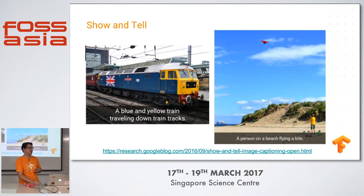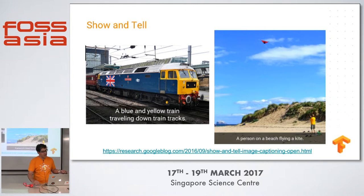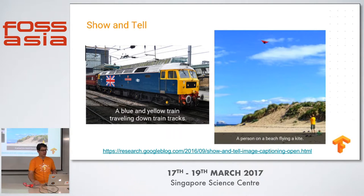Another really exciting area of research is the combination of multiple models. Suppose you have an image model that classifies into a fixed set of classes — if we combine it with a language model, we can actually generate captions. One image was automatically captioned as 'a blue and yellow train traveling down train tracks' and another as 'a person on a beach flying a kite.' These are really accurate captions, automatically done using a TensorFlow model by Google Brain researchers.